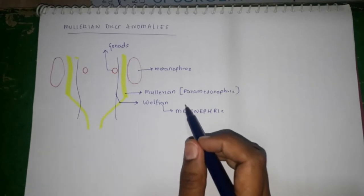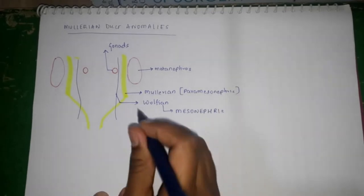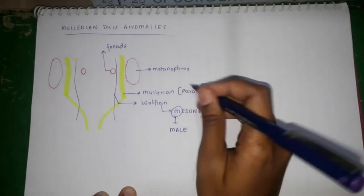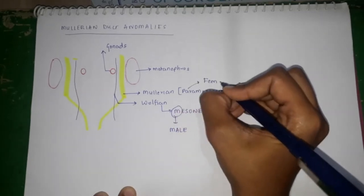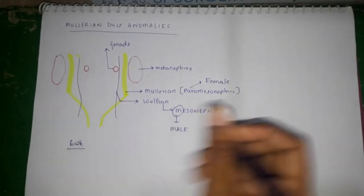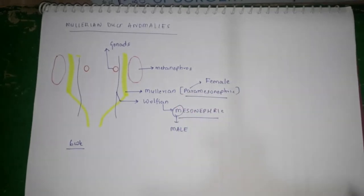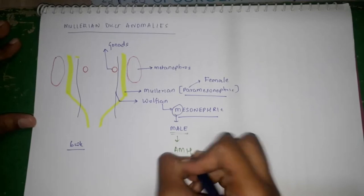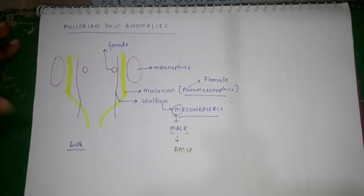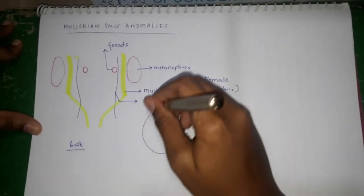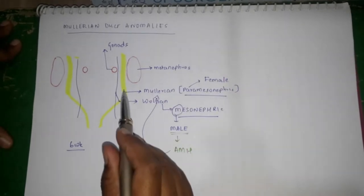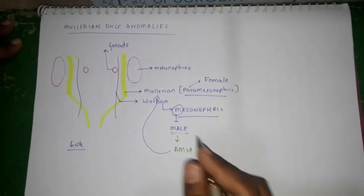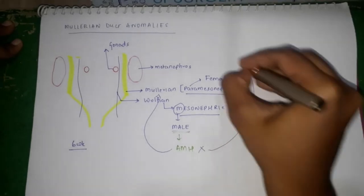These two structures form different structures in different genders. The Wolfian duct — mesonephric duct — is important in the formation of the male reproductive system. The paramesonephric duct is important in the formation of the female reproductive system. At six weeks of age, both structures are present in the fetus. After six weeks, in males, the testis produce a hormone called anti-Müllerian hormone, which causes the Müllerian duct to undergo degeneration, while the Wolfian duct undergoes developmental formation. In females, because there is no testis, there is no anti-Müllerian hormone, so the Müllerian duct starts forming.